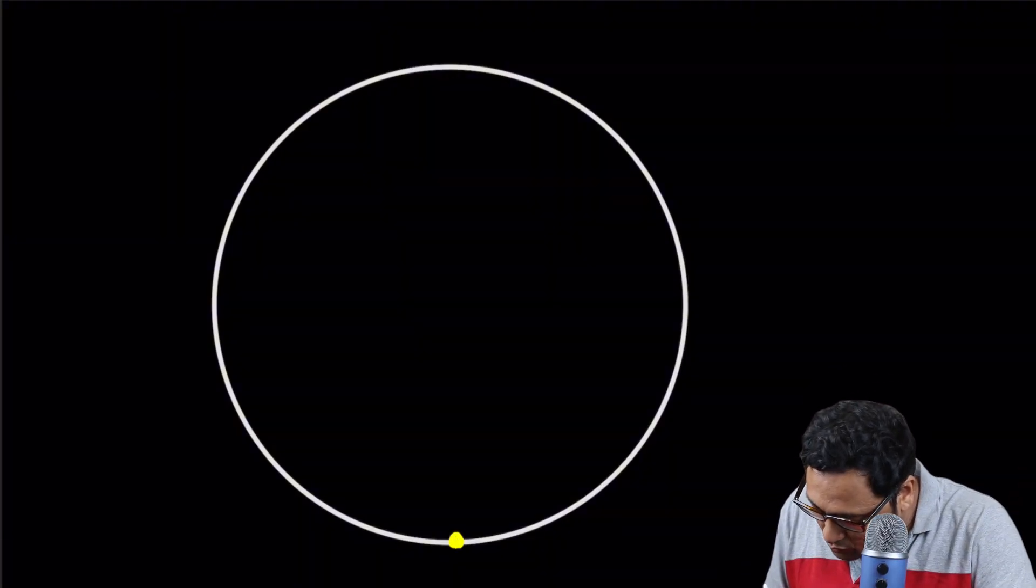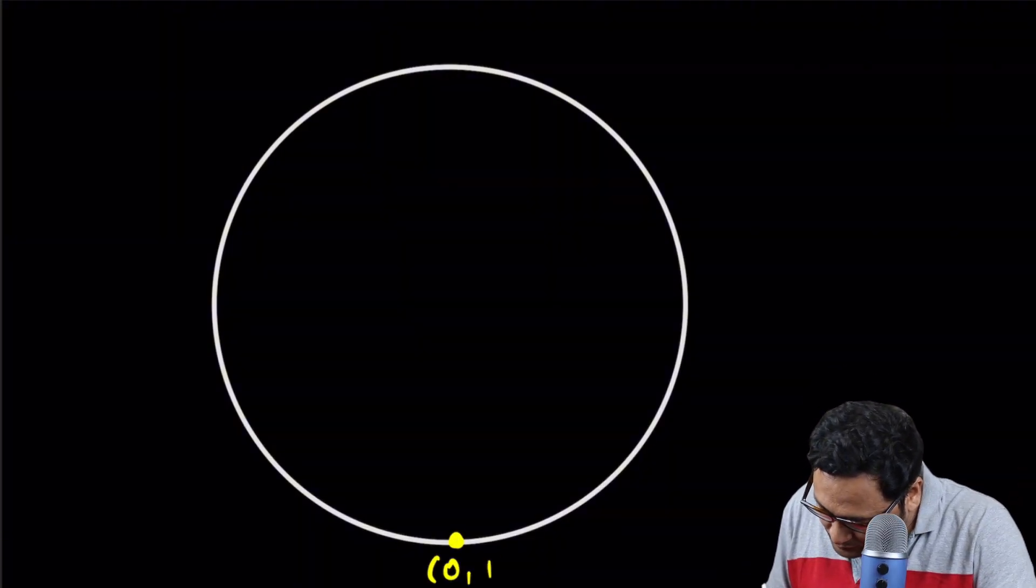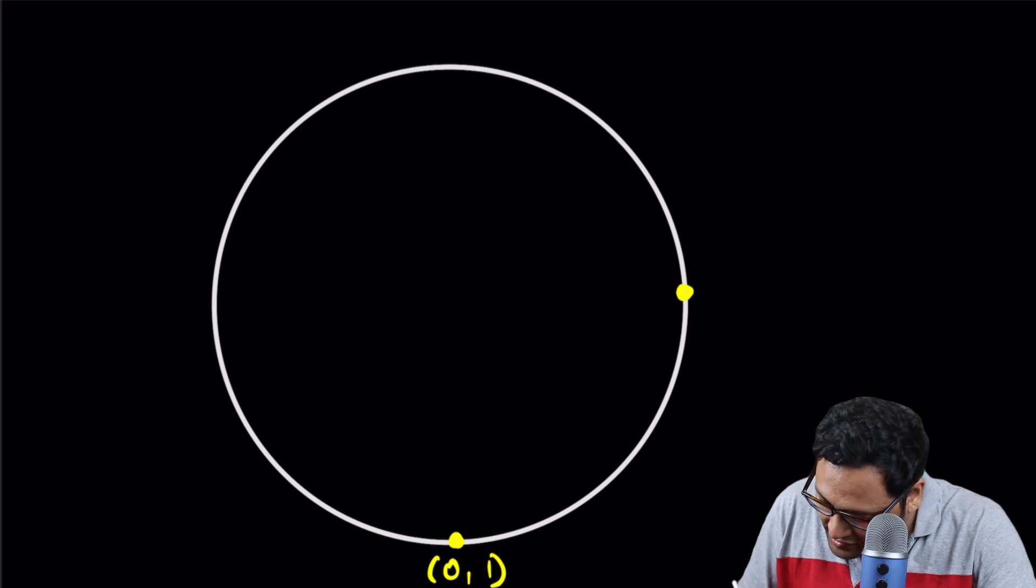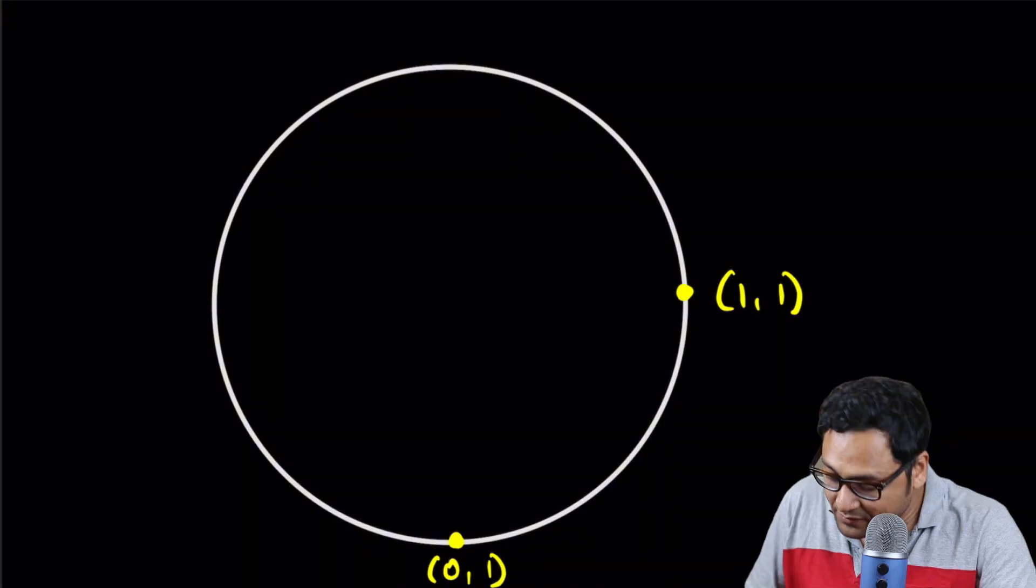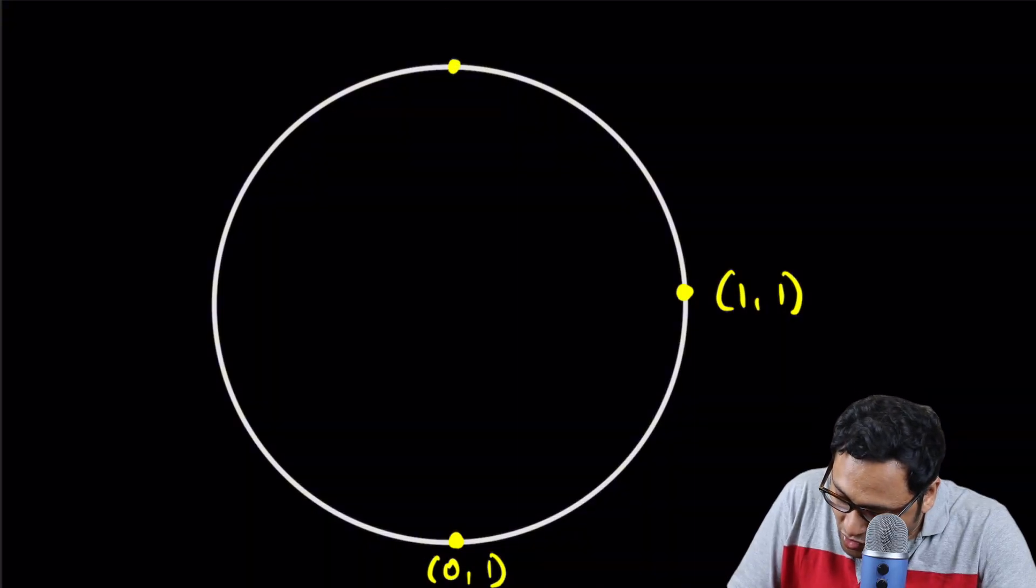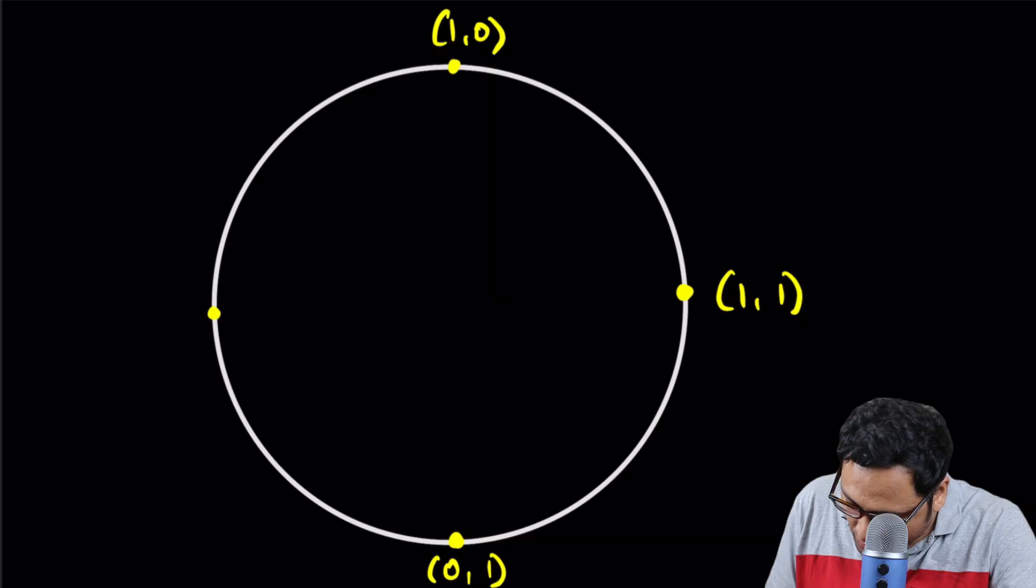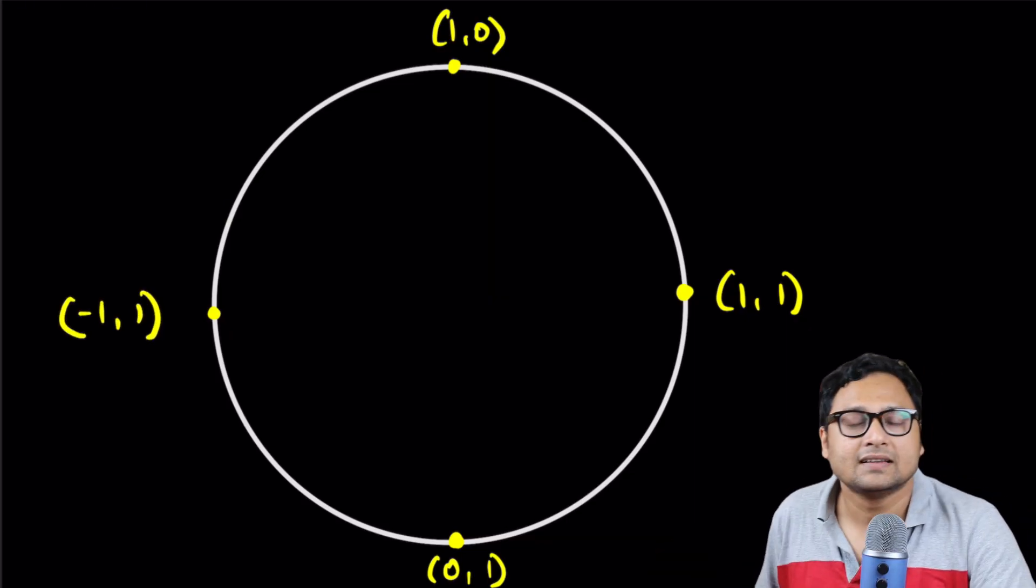We will take 0, 1, start here. Then we have 1, 1 here. And we have 1, 0 here. And we have minus 1, 1 here.